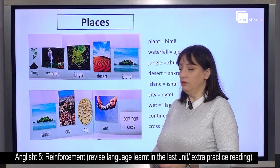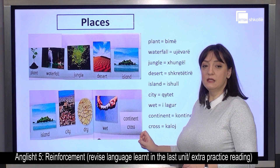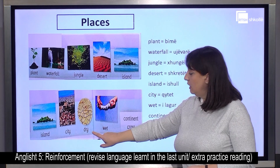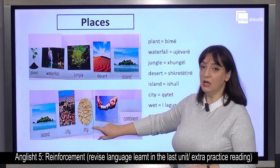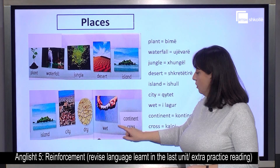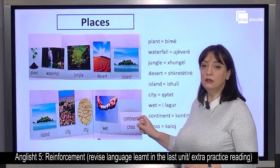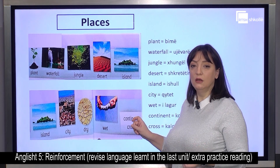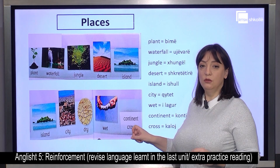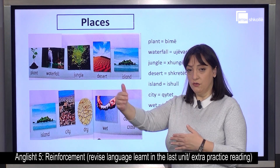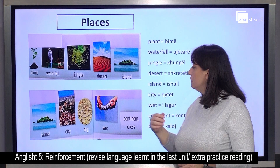Here we have some places and here we have some adjectives. Dry — i thatë. Wet — i lagur apo i lagësht. Continent — what does it mean continent? As we say it, continent. Cross — do you remember the verb cross? Kaloj? Cross from one side to the other side, or cross the continent.